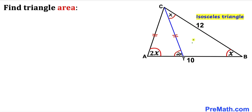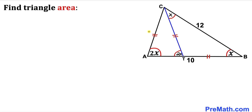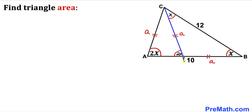We can see that triangle CBT is an isosceles triangle since these two angles are congruent, so therefore side length CT equals side length BT. Let me label side length AC as lowercase a; then side CT is also lowercase a, and side BT is lowercase a as well.